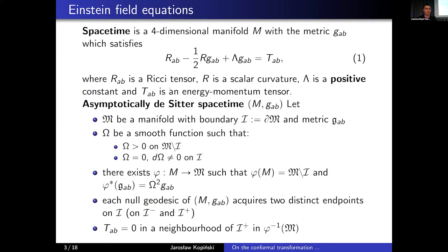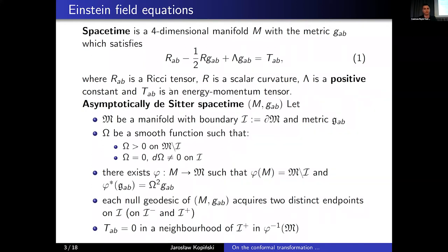When talking about spacetime, I will always need a four-dimensional manifold M with the metric G which satisfies Einstein field equations visible in equation one. On the left-hand side we have the Ricci tensor R_{ab}, the scalar curvature R, and the term with lambda which is called the cosmological constant. For the purposes of this talk, I will always assume that this constant is positive. On the right-hand side of equation one we have the source term for the Einstein field equations, which is called the energy momentum tensor.